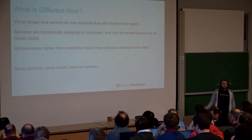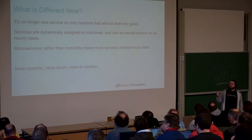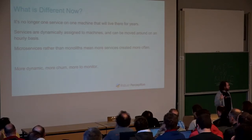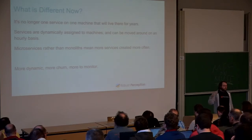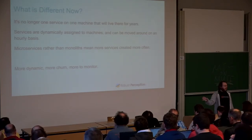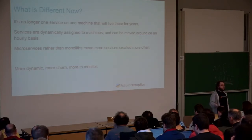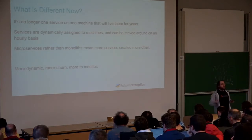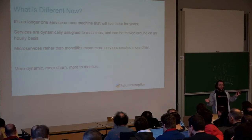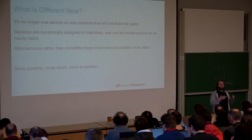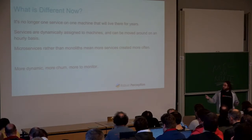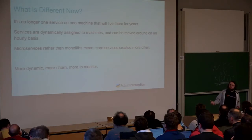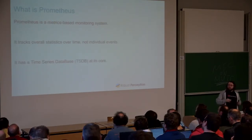What's different these days? It's no longer the case that we have one service on one machine that will be there until the machine finally dies. Instead, we're in a world with Docker and Kubernetes where services are dynamically assigned to machines and can be moved around on an hourly basis due to auto-scaling or new releases. We're also going from a handful of monoliths to tens or hundreds of microservices. The overall result is a much more dynamic system with far more to monitor.